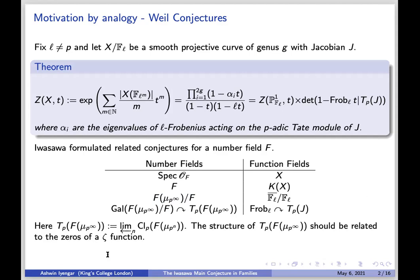Similarly, I had the L-Frobenius acting on the Tate module of the Jacobian. Analogously, you should have the Galois group of this extension acting on something like the p-adic Tate module of the Jacobian — or in other words, the P-part of some space of divisor classes. Precisely, you're interested in the inverse limit of the P-parts of the class groups of the finite extensions F(mu_{P^n}). You take F, adjoin the P-to-the-n-th roots of unity, take the class group and its P-Sylow subgroup, these form an inverse system, and you take the inverse limit. This should be thought of as the analogous thing in the number field case.